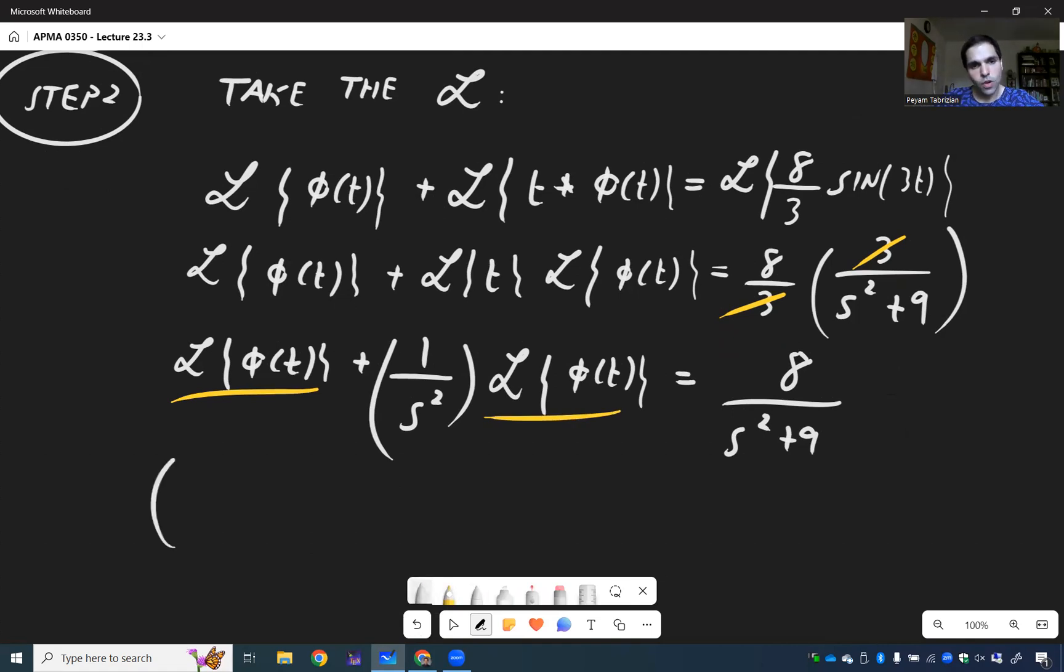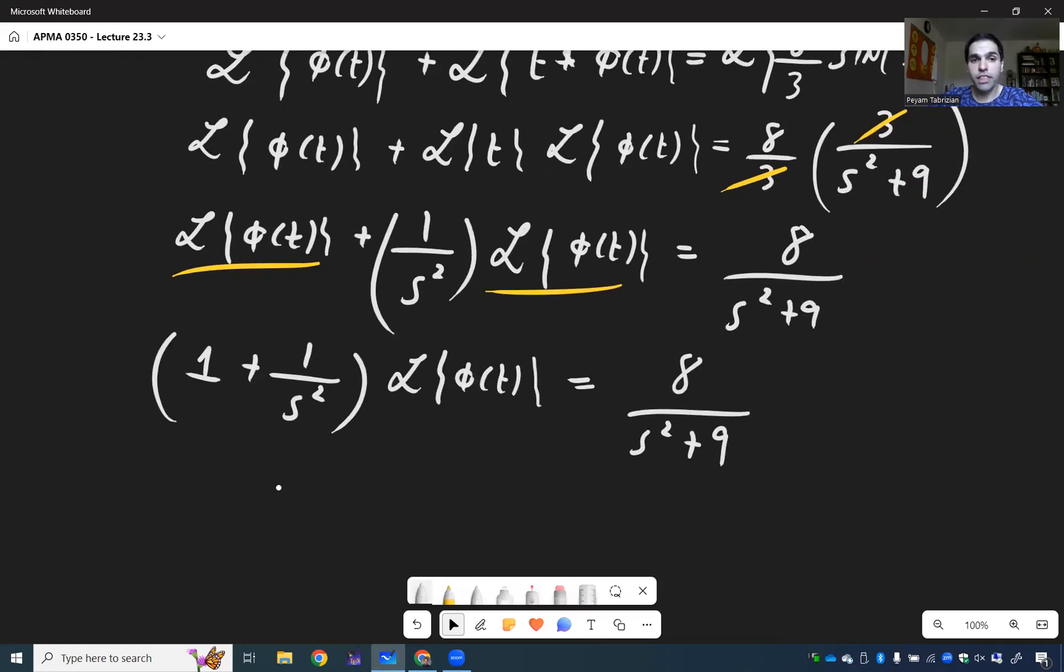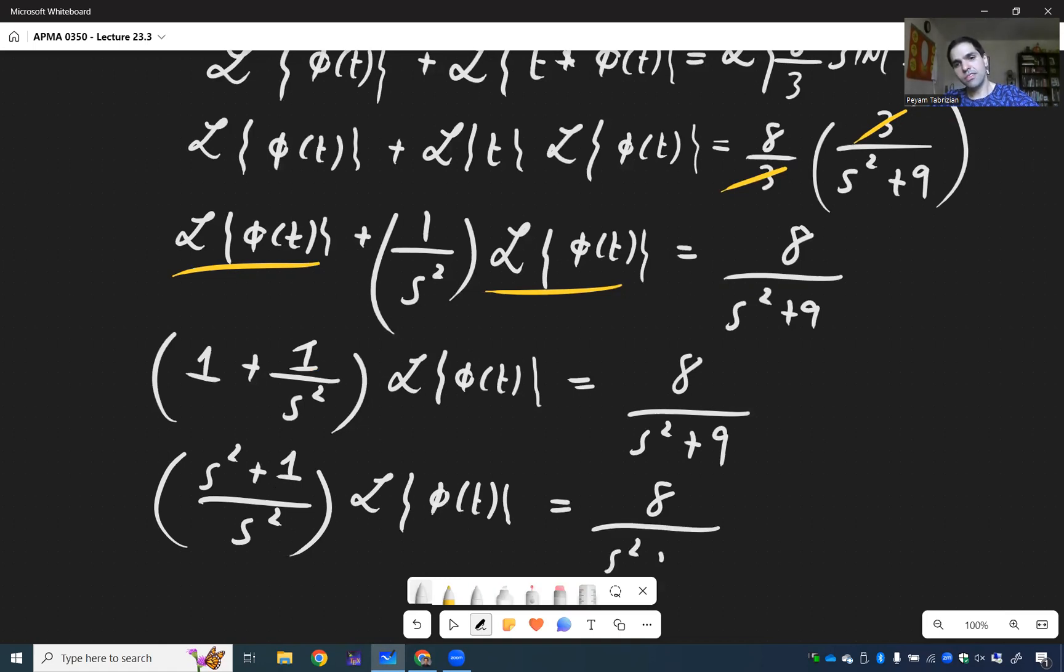And let's put everything on a common denominator. So that's (s² + 1)/s² ℒ{φ(t)} = 8/(s² + 9).